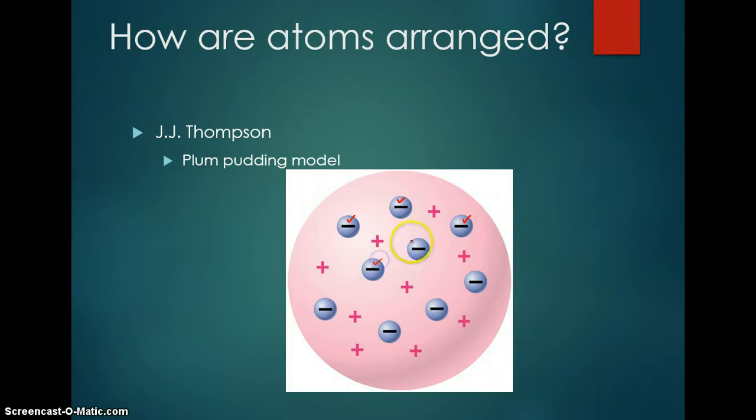And so if you count, if we have our electrons that we count up, we have 1, 2, 3, 4, 5, 6, 7, 8, 9, there must then be 9 positive particles.